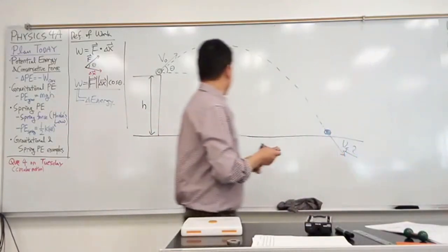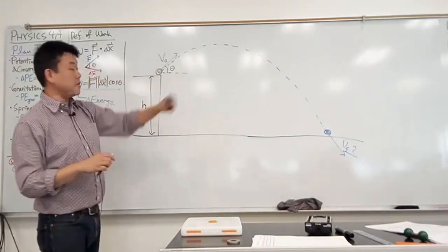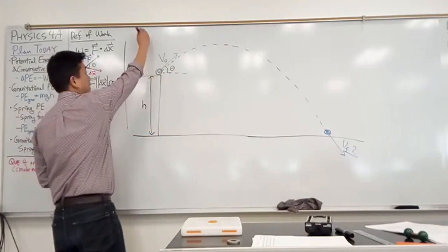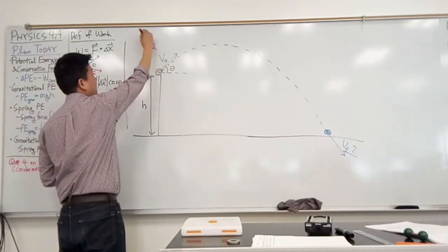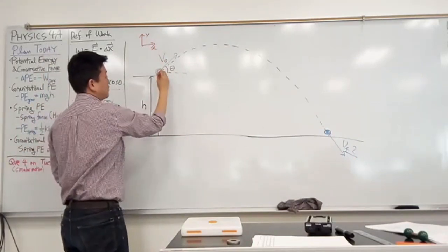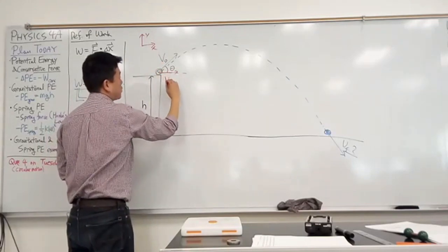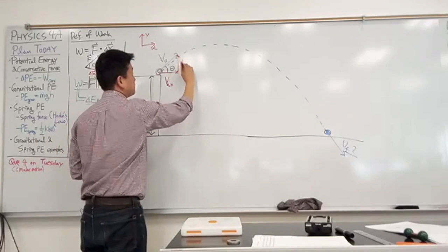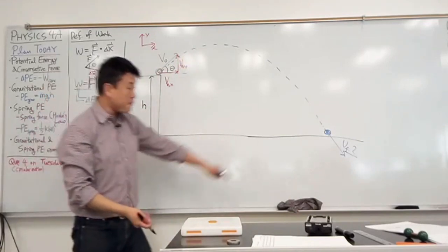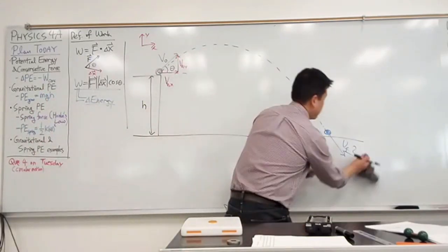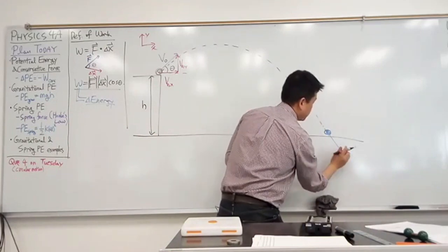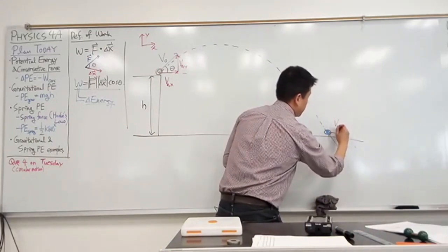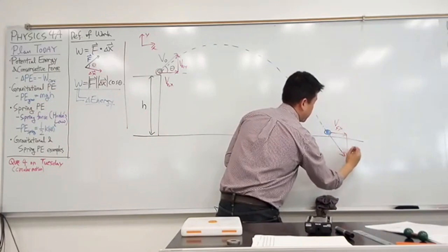So this is how I'm going to do it. I'm going to break up this into components. So define x and y coordinates. So initial velocity is going to have x component and it's going to have y component, right? Final velocity, same thing, it's going to have an x component and the y component.